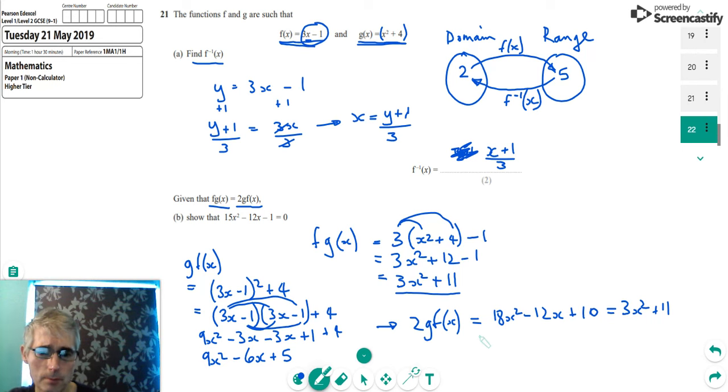Then what I'm going to do is I'm going to subtract the 3x squared from the 18x squared. That's going to give me 15x squared minus the 12x. And if I take away 11 from both sides, it's going to give me minus 1. And that's going to be equal to 0 because I'm going to be left with nothing on the right hand side of that equation. And we've done it.